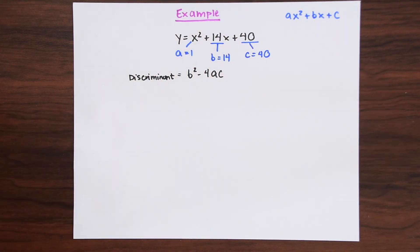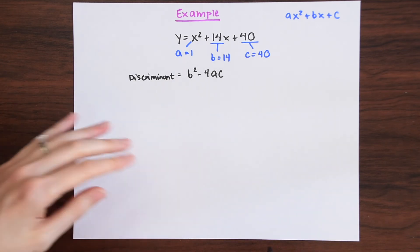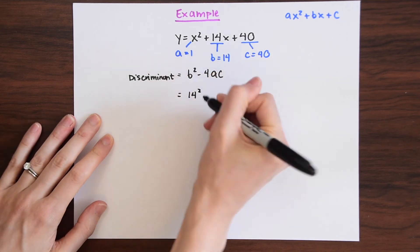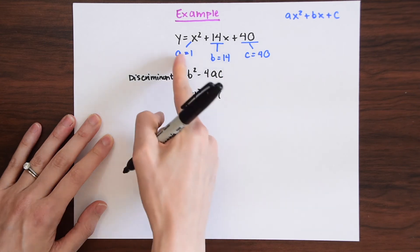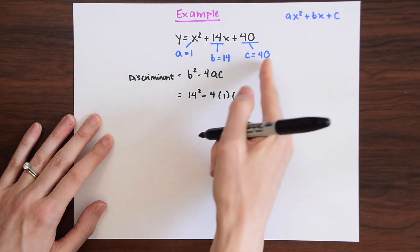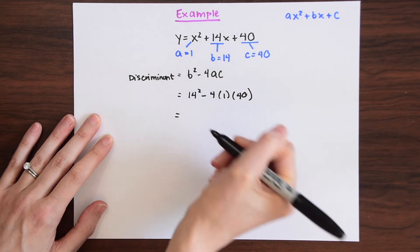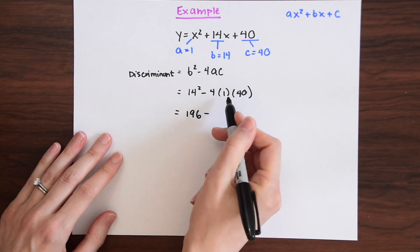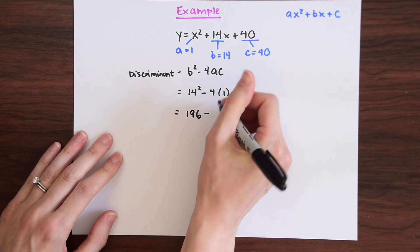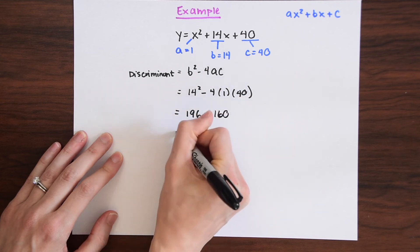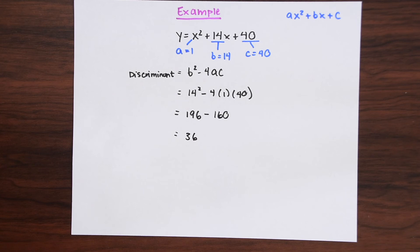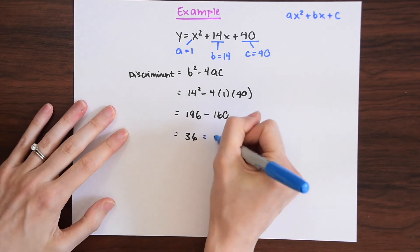Now that we know a, b, and c, let's plug them into the discriminant formula. We get b squared — which is 14 squared — minus 4 times a, which is 1, times c, which is 40. So 14 squared equals 196, minus 4 times 1 times 40, which is 160. And 196 minus 160 equals 36. So the value of our discriminant is 36.